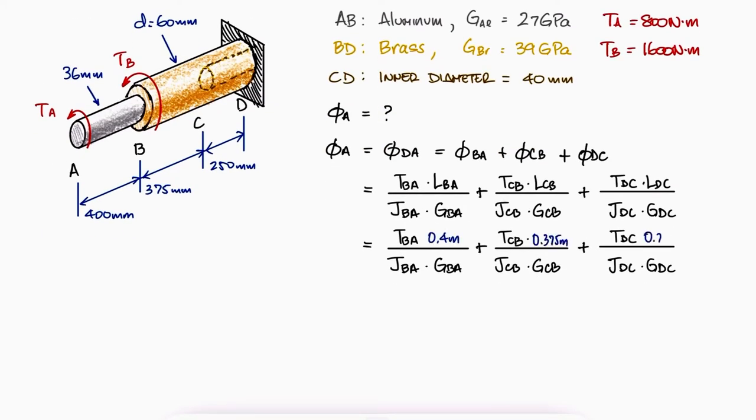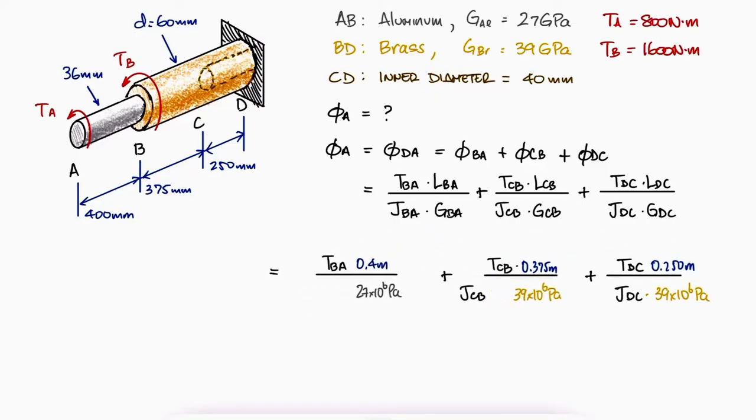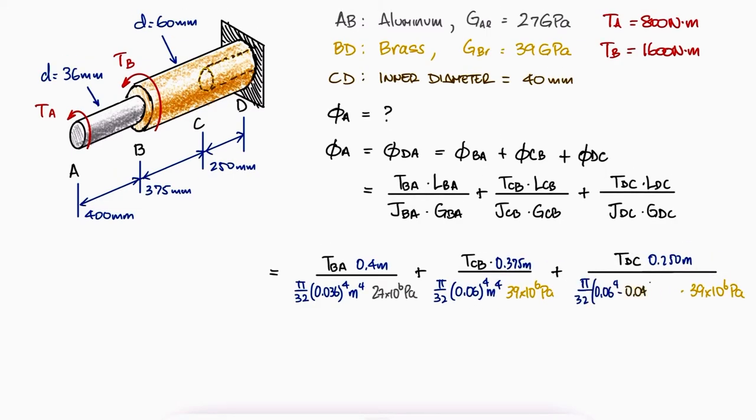The lengths are given, and we know the shear modulus between A and B for the steel, and between BC and CD for the brass. The polar second moment of area can be calculated for that of a solid cylinder for AB and BC, and that of a hollow cylinder for section CD.